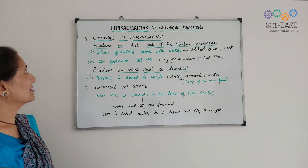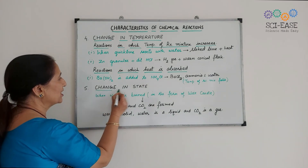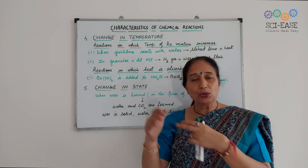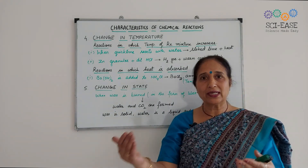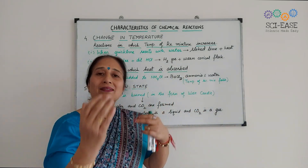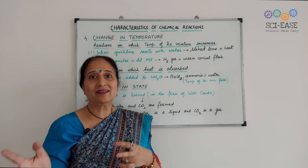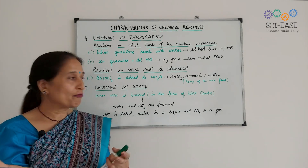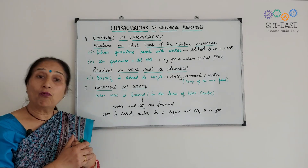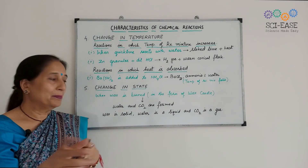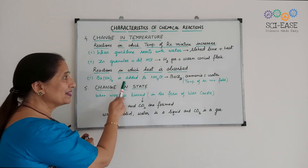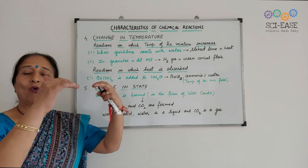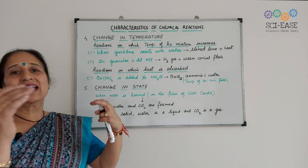The last characteristic is change in state. State means solid, liquid, or gas — matter has three states. A very common example: take a candle made of wax and burn it. You will see that water and carbon dioxide are formed. This means there is a change in state — wax is a solid, water is a liquid, and carbon dioxide is a gas. So whenever a change in state is observed, we say a chemical reaction has occurred.